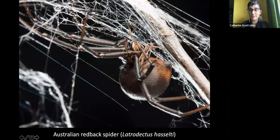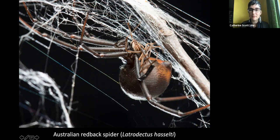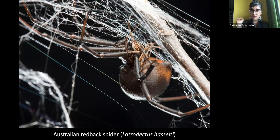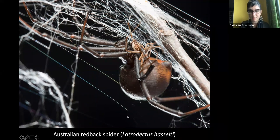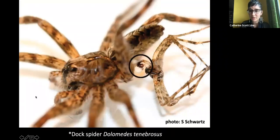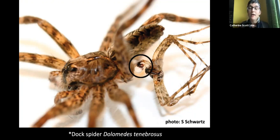Sexual cannibalism in North American black widows is actually fairly rare after copulation, and males can often mate with multiple females. However, redback spider males in Australia actively sacrifice themselves: during sperm transfer, the male somersaults to put his abdomen in front of the female's fangs and lets her eat him while he's transferring sperm. Allowing himself to be eaten means she will use more of his sperm to father offspring. Dock spider males die spontaneously during copulation, and the female carries the male's body as a mating plug preventing other males from mating with her.